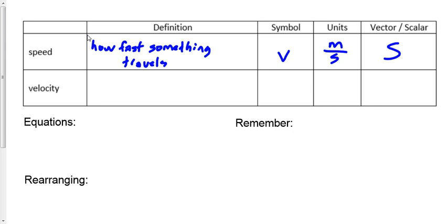Now we're going to define velocity a little bit better than we defined speed. Velocity is the rate of change of position. What does rate mean? How quickly something happens — that's the rate at which something happens. Velocity is the rate of change of position, so it's not how much the position changes, but rather how quickly the position changes.